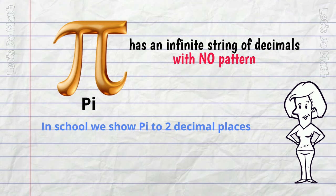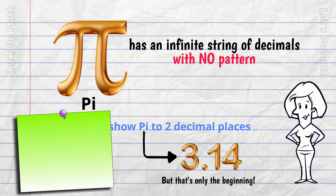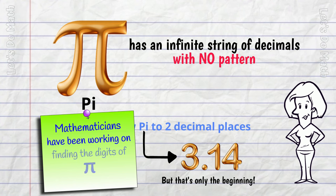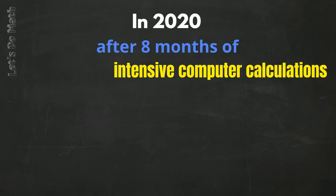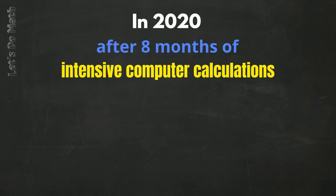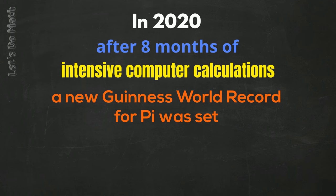In school, we show pi to 2 decimal places as 3.14, but that is only the beginning! Mathematicians have been working on finding digits of pi for years, and get this - in 2020, after 8 months of intensive computer calculations, a new Guinness World Record for pi was set, calculating it to 50 trillion places!